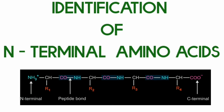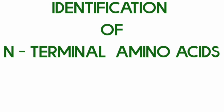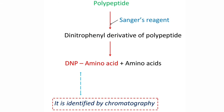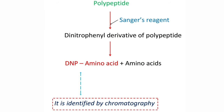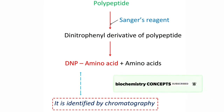Coming to identification of N terminal amino acids — there are three different reagents that can be used. The first method is Sanger's reagent, which is chemically 1-fluoro-2,4-dinitrobenzene. This reagent is mixed with the polypeptide chain in a process called protein labeling. Sanger's reagent binds with the N terminal amino acid, leading to a tagged protein. The product formed is a dinitrophenyl derivative of the polypeptide.